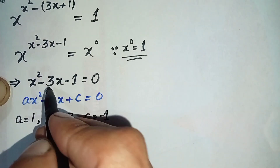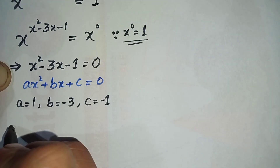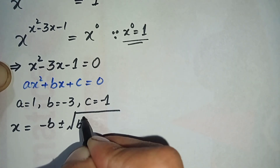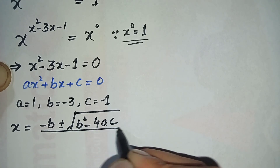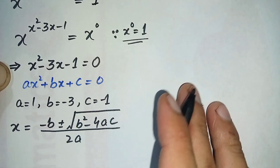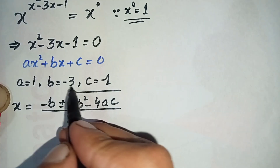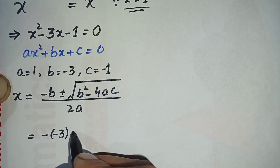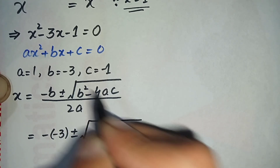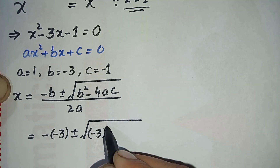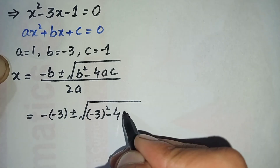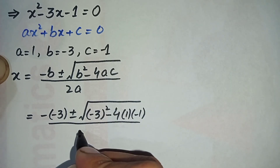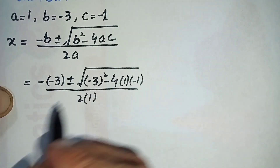Now we write the quadratic formula for x: x equals minus b plus or minus square root of b² minus 4ac, all divided by 2a. Replacing a, b, and c with the values 1, minus 3, and minus 1, the equation becomes: minus (minus 3) plus or minus square root of (minus 3)² minus 4 times 1 times (minus 1), divided by 2 times 1.